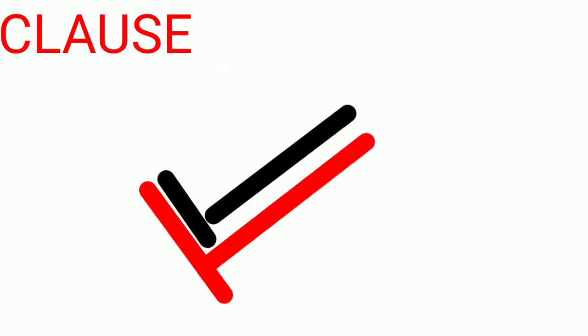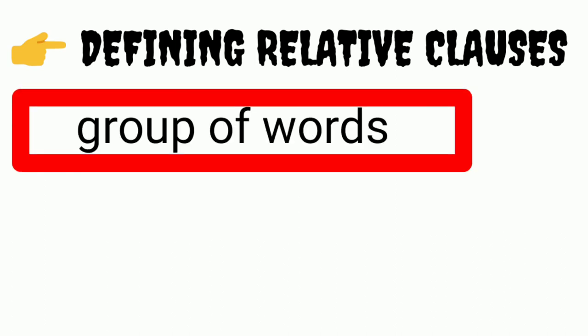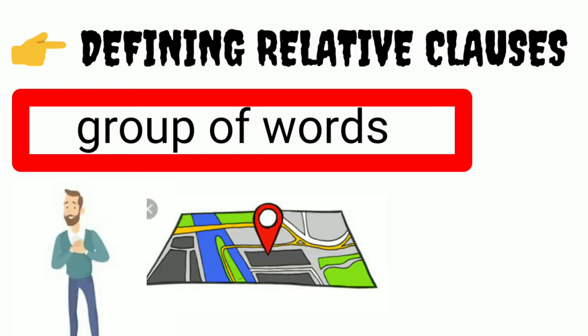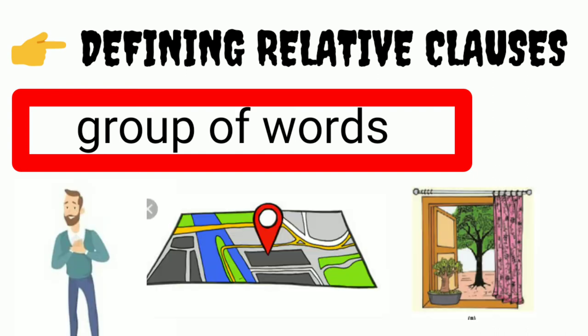Hope the clauses are clear. Now let us see defining relative clause in detail. If a group of words defines the subject — like a person, place, or thing — it is called a defining relative clause.